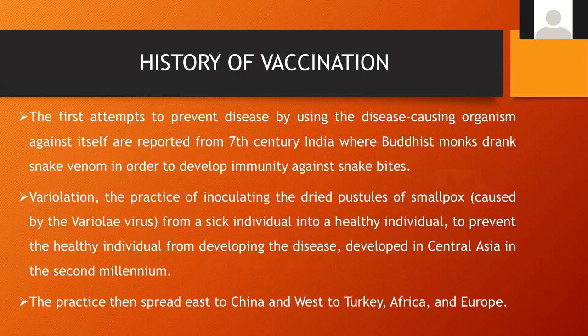The first attempts to prevent a disease by using the disease-causing organism against itself are reported from the seventh century in India, where Buddhist monks drank snake venom in order to develop immunity against snake bites. Later, in the second millennium, the variolation concept emerged. Variolation is the practice of inoculating dried material from a smallpox pustule from a sick individual into a healthy individual to prevent the healthy individual from developing the disease. This practice spread to East China and west to Turkey, Africa, and Europe.